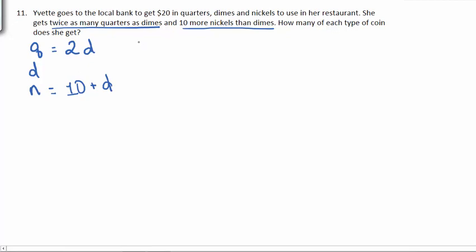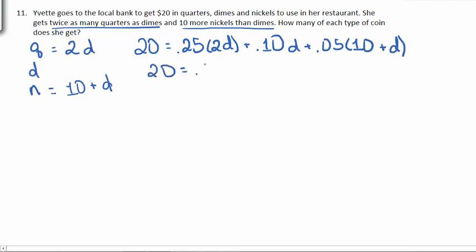We know that their cost should add up to be $20. Well, quarters are worth 25 cents, we have two D of those. Dimes are worth 10 cents, we have D of those. And nickels are worth 5 cents, and we have 10 plus D of those. 0.25 times 2 is 0.5 d, plus 0.1 d. 0.05 times 10 is 0.5, and then plus 0.05 d.